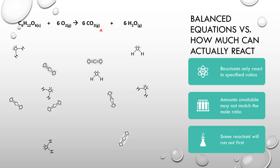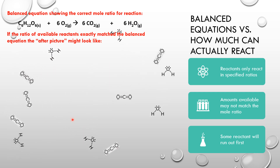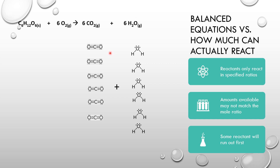All the rest of the oxygens would also eventually have to crash into what's remaining of the glucose molecule to turn them all into products. After the reaction of a perfect ratio — one mole of glucose with six moles of oxygen — all of the oxygen and all the glucose would get used up to make six moles of carbon dioxide and six moles of water, randomly arranged in the gas phase.